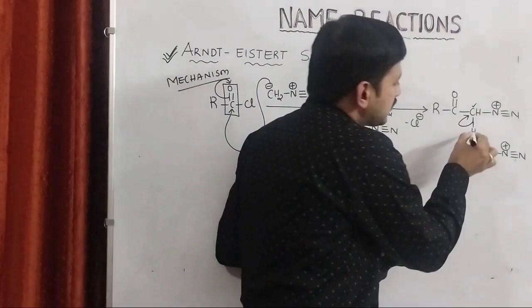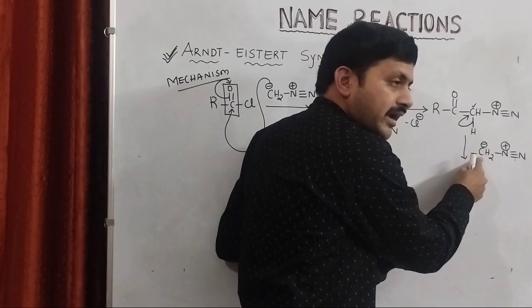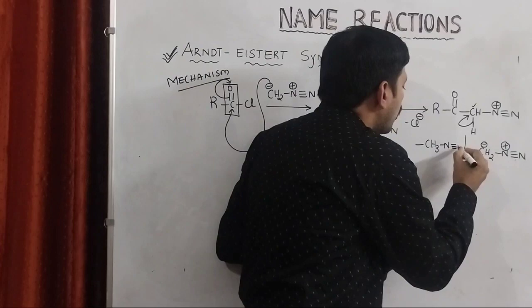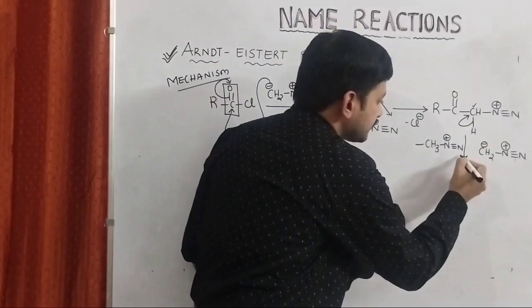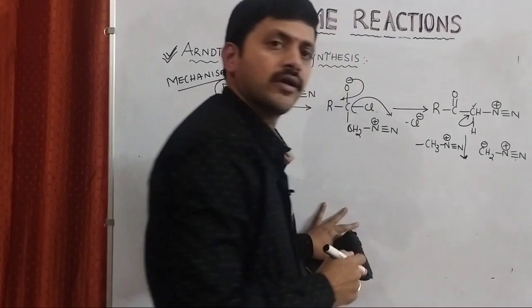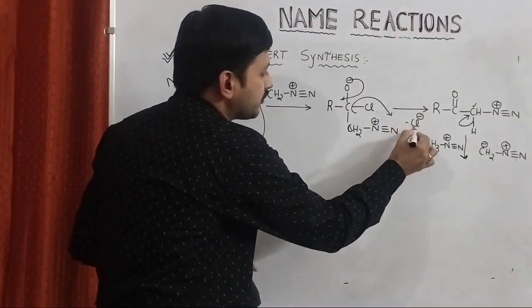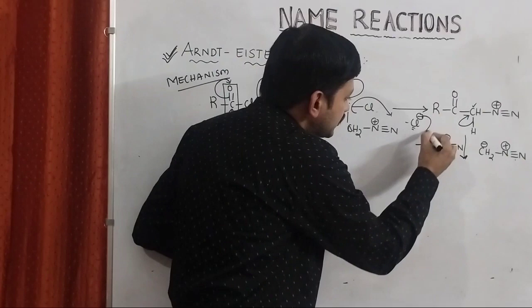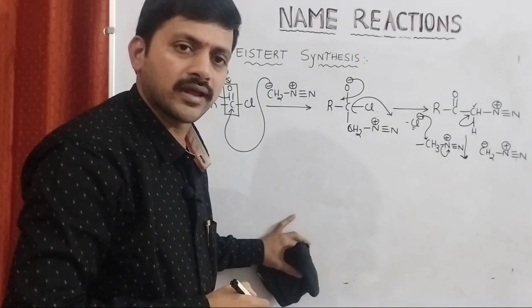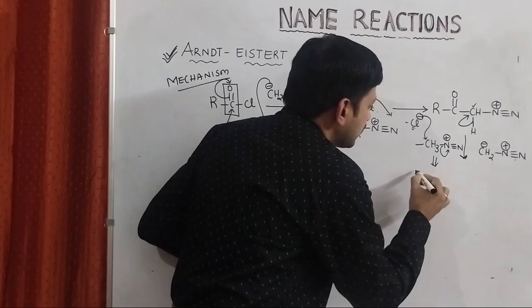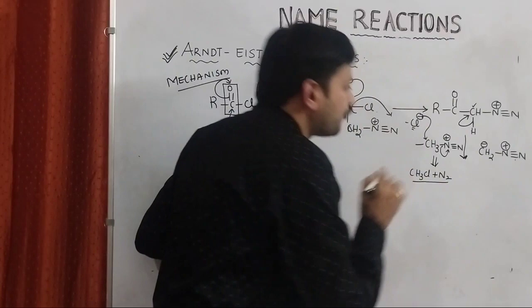Thereby this carbon takes negative charge and the hydrogen is removed in the form of H⁺. The H⁺ moves towards C⁻ and produces CH3-N≡N⁺. This will be removed. Now, the Cl⁻ that was removed earlier approaches this particular carbon, whereby the N≡N is removed. From this we can say that CH3Cl and N2 will be produced as byproducts.